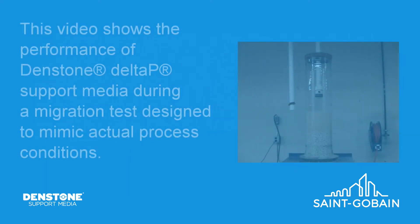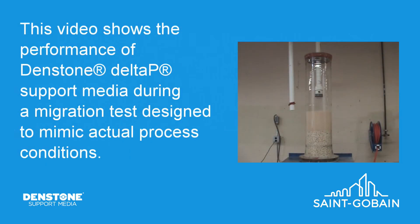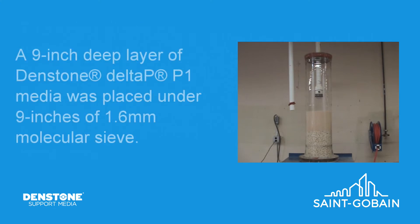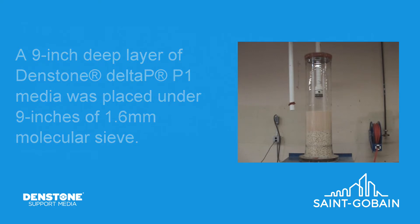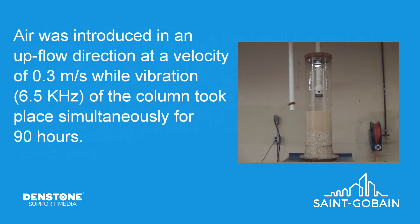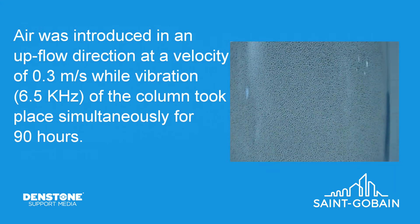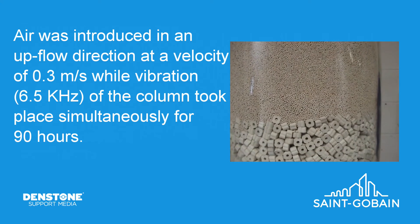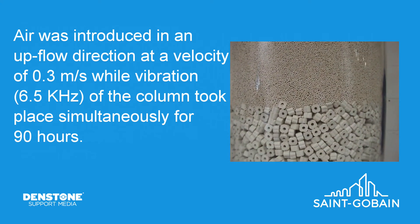This video shows the performance of Dentstone Delta P support media during a migration test designed to mimic actual process conditions. A 9 inch deep layer of Dentstone Delta P P1 media was placed under 9 inches of 1.6 millimeter mole sieve. Air was introduced in an upflow direction at a velocity of 0.3 meters per second while vibration of the column took place simultaneously for 90 hours.